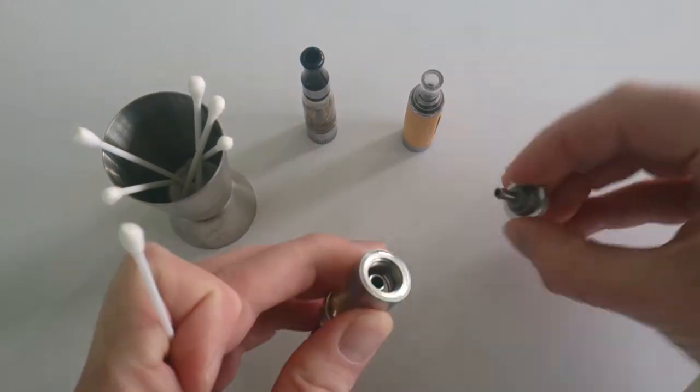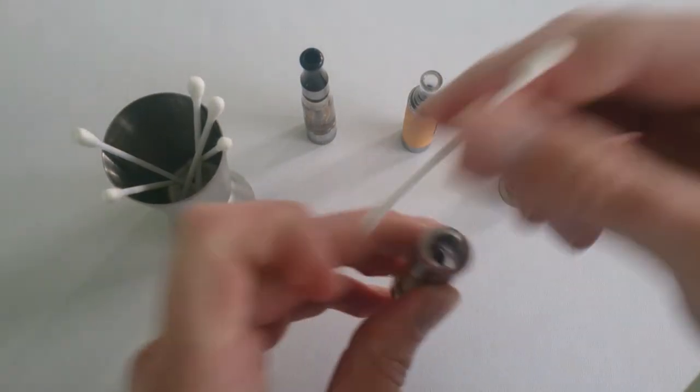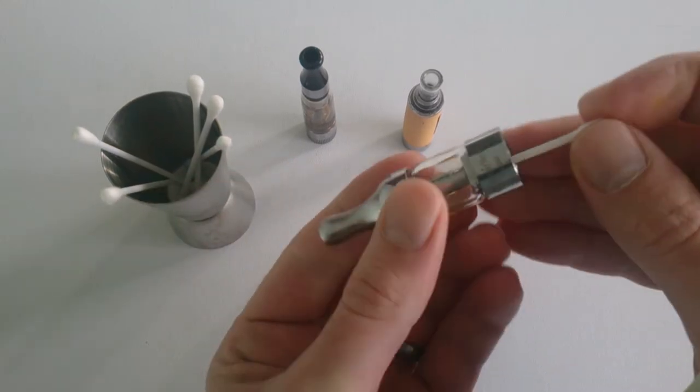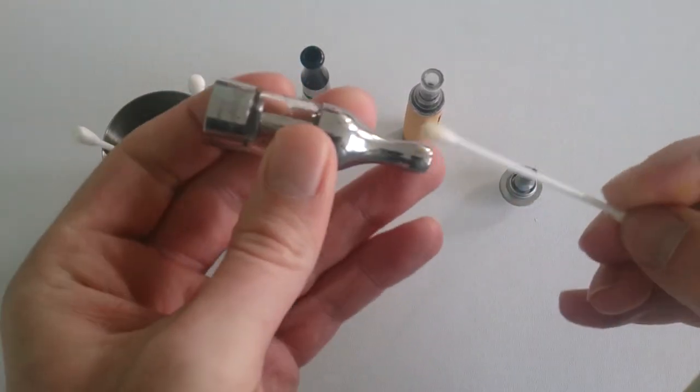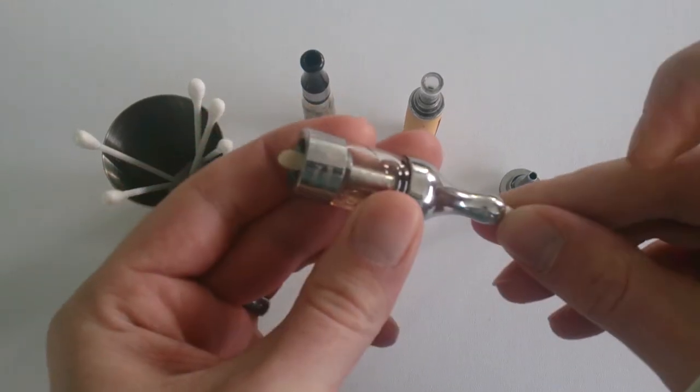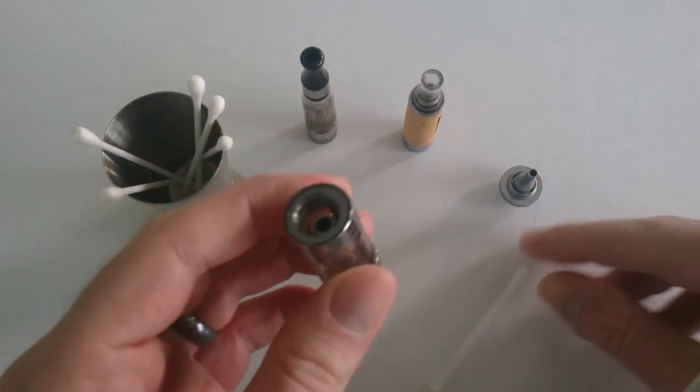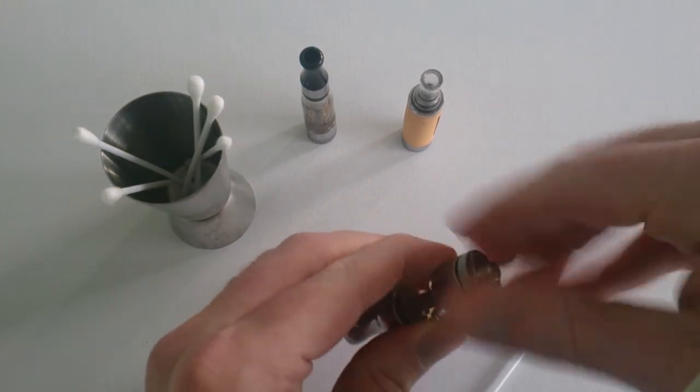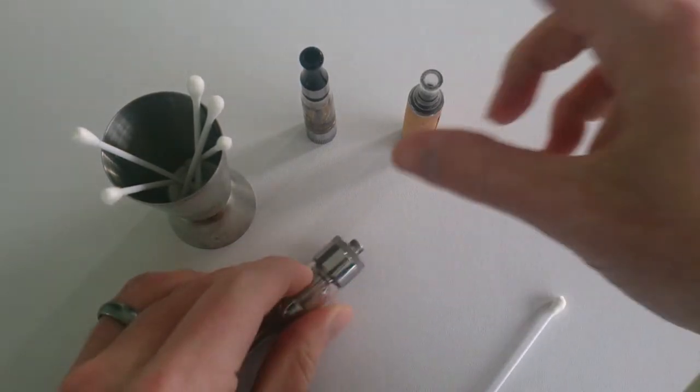When you clean it out every so often, the tubes get condensation and all sorts. Without a cotton bud, it's really hard to clean. It just makes life so much easier and dries it all out. You can also use it on pretty much all the tanks you've got.